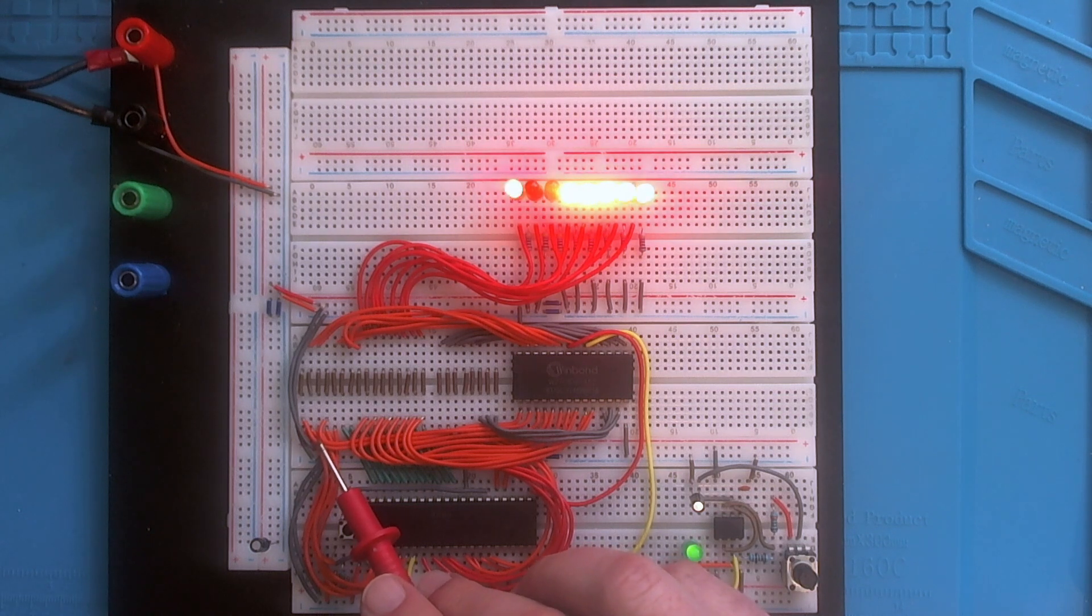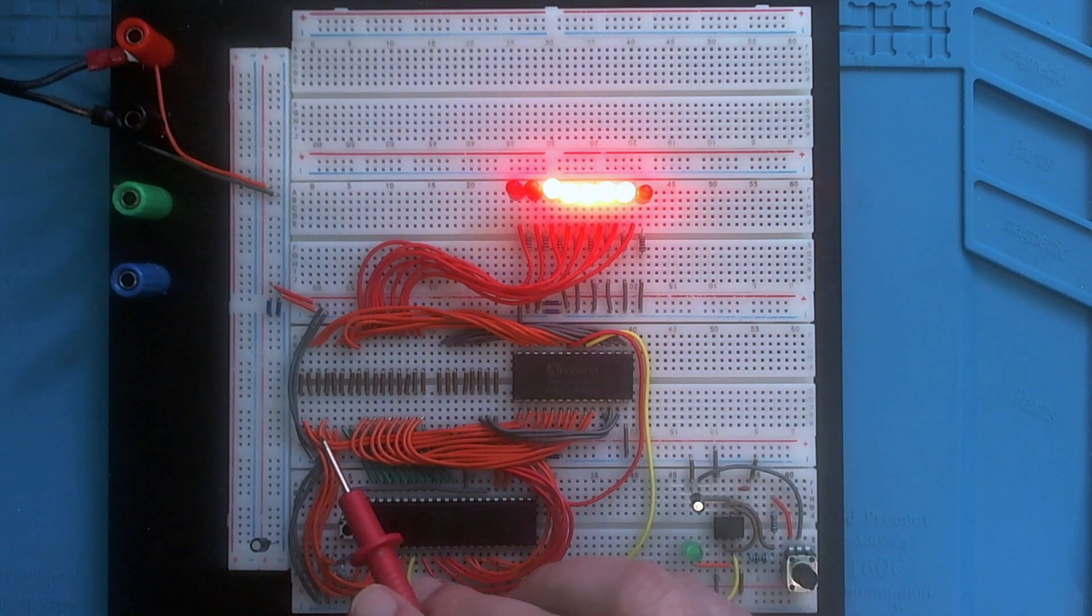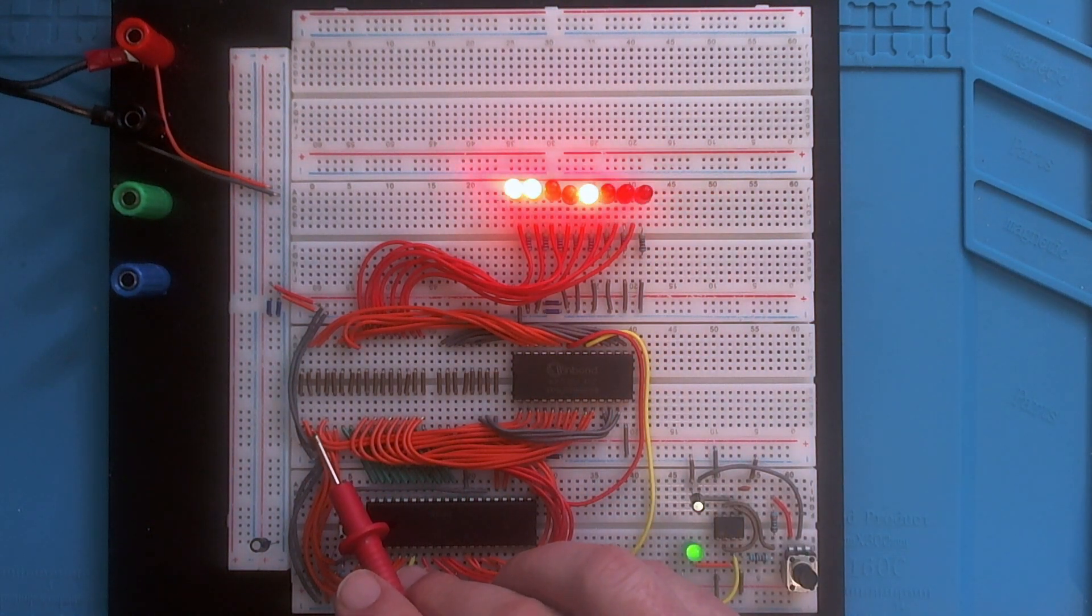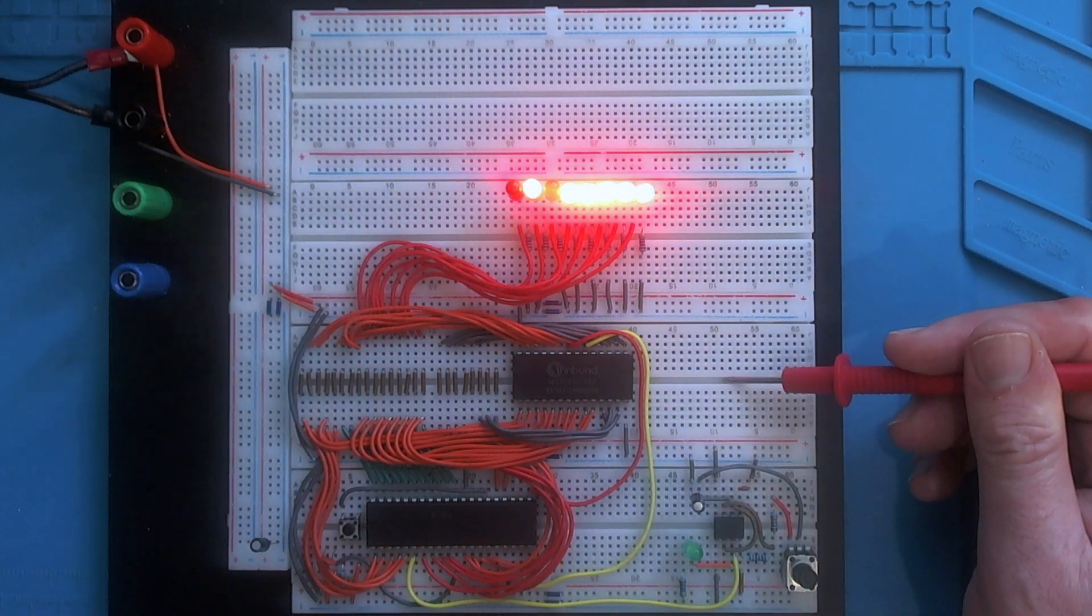So if address line 15 is low, I'm addressing the first 32K of memory, so I'll select the ROM. If A15 is high, I'm selecting the top 32K of memory, so I'll select the RAM.